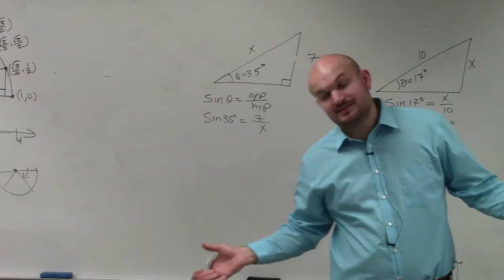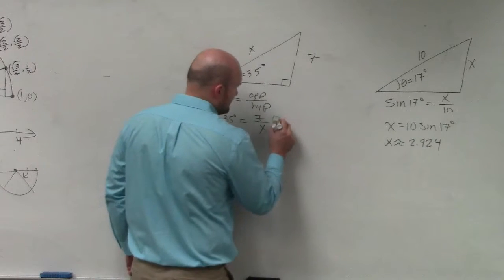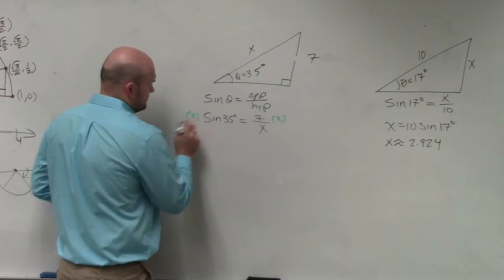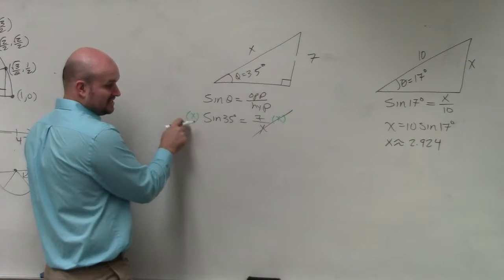You cannot solve for a variable when it's in the denominator. So I need to multiply by my variable on both sides to get the x off the denominator. Then I need to isolate x.